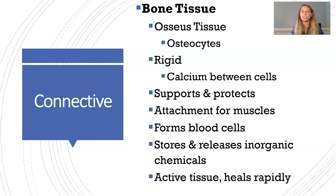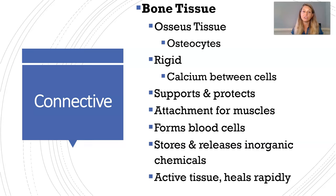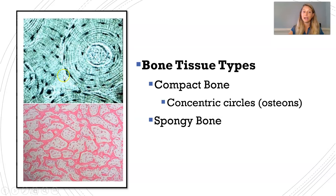Bone tissue, also called osseous tissue, is a connective tissue. The cells of bone tissue are osteocytes. It is a very rigid tissue because it is embedded with calcium, a hardened mineral. Bone provides support, protection, and places for muscles to attach. It also forms blood cells in the bone marrow, and stores and releases inorganic chemicals like calcium. Bone is a very active tissue, meaning it heals rapidly. There are two types: compact bone, seen in concentric circles called osteons, and spongy bone, which looks less regular.